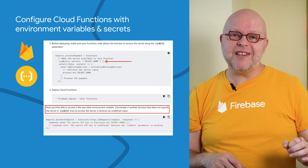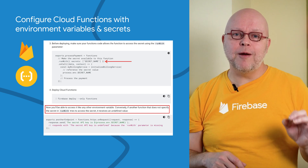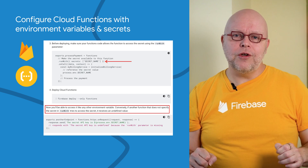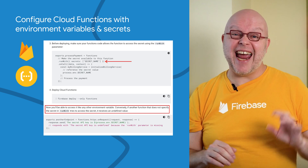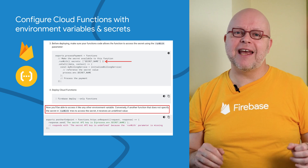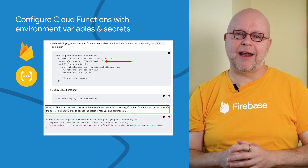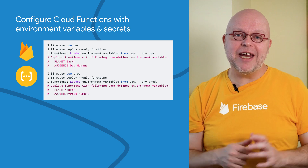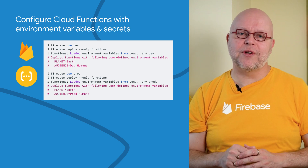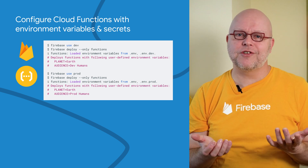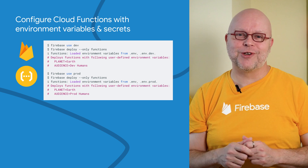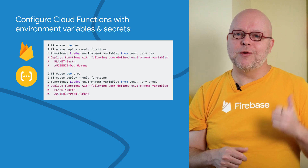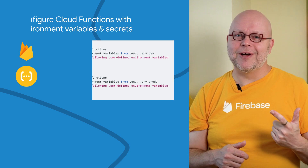Those values are encrypted and only available to the specific functions that use them. In your code, you can then access all of these values like any other environment variables in your process. With these changes, you can also maintain different configuration files for different environments, like for the dev project versus your production project. The Firebase CLI will switch between them automatically when you start the emulators or run Firebase Deploy.